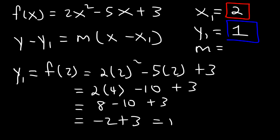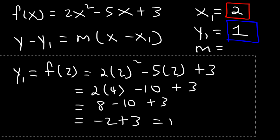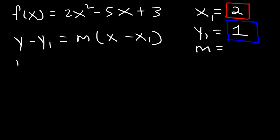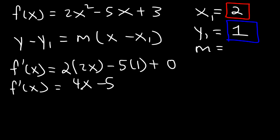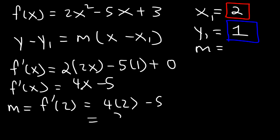Now the only thing we need to do is calculate the slope when x is equal to 2. So first, we've got to find the first derivative. The derivative of x squared is 2x, the derivative of x is 1, and the derivative of a constant like 3 is 0. So f prime of x is equal to 4x minus 5. The slope is going to equal f prime of 2, so that's 4 times 2 minus 5. 4 times 2 is 8, and 8 minus 5 is 3. So the slope of the tangent line is equal to 3 when x is 2.